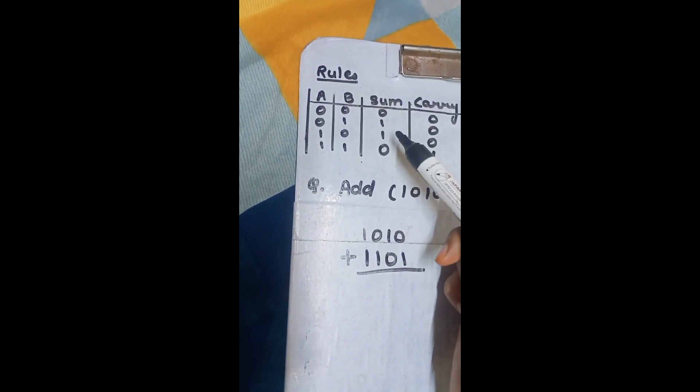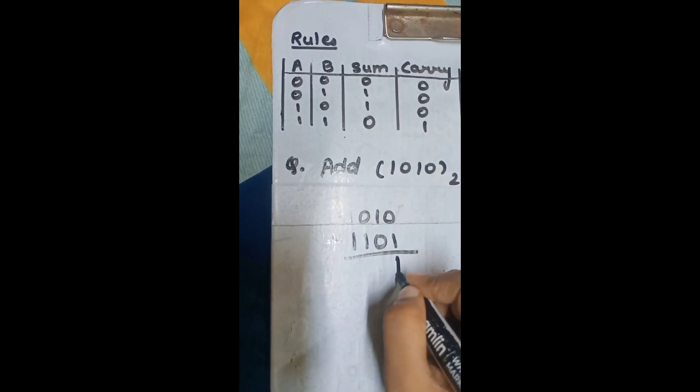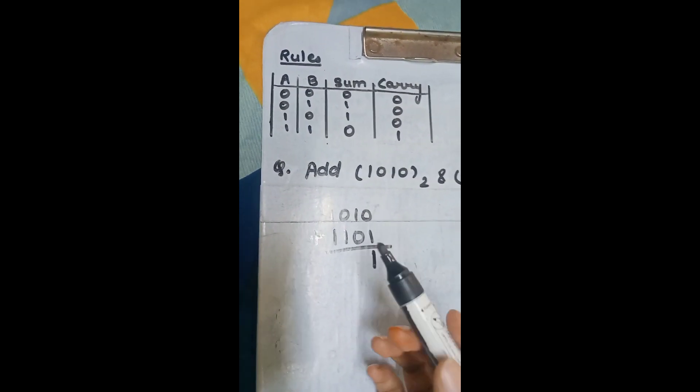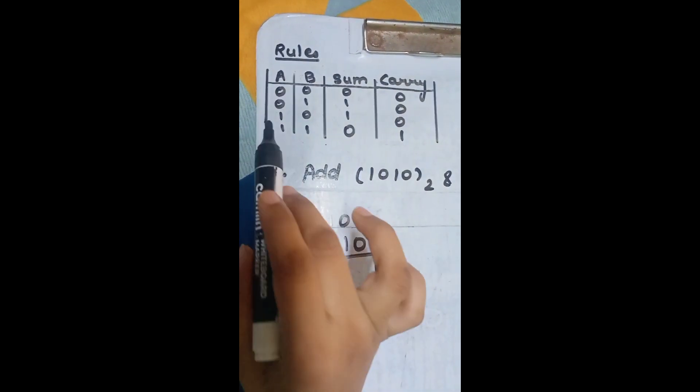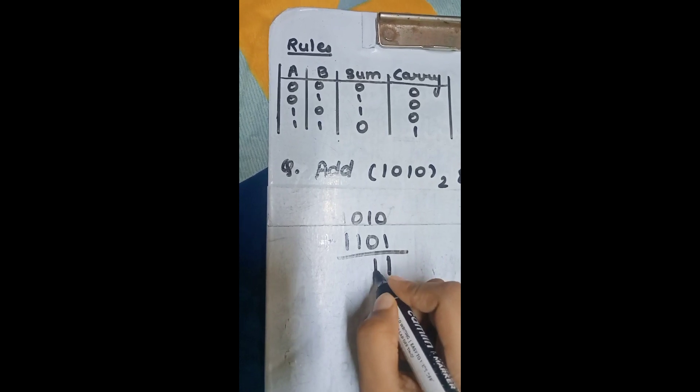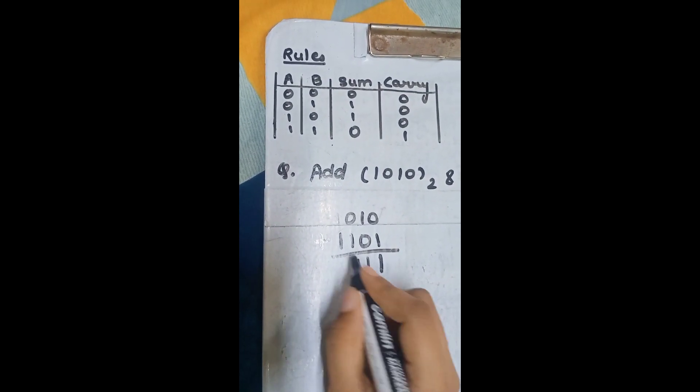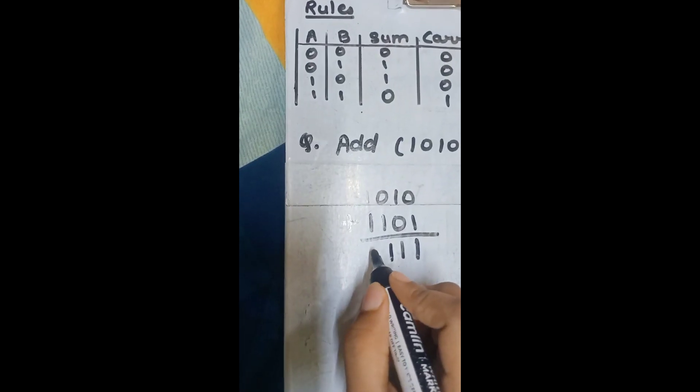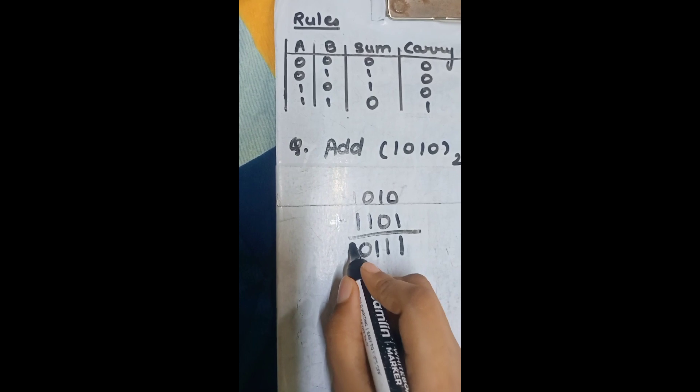0 plus 1, sum is 1, carry is 0. Write here 1. Carry is 0, so no need to write. 1 plus 0 is 1, carry is 0. 0 plus 1 is 1. And 1 plus 1, sum is 0